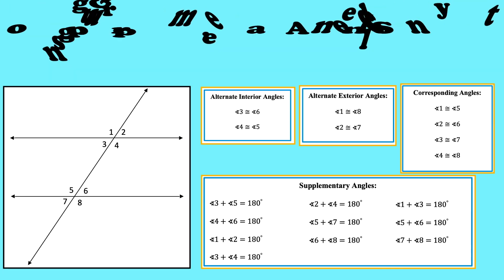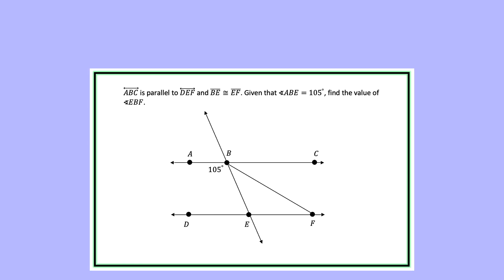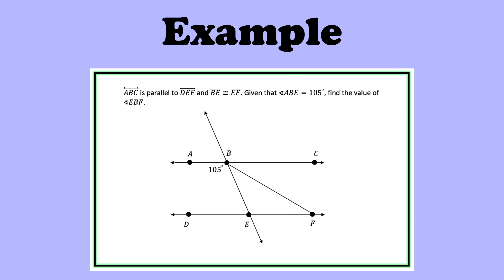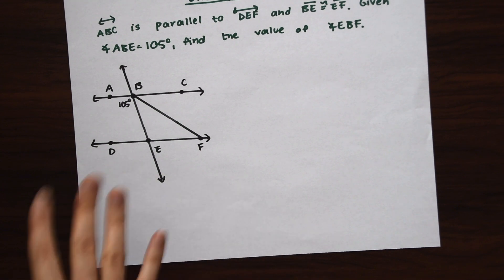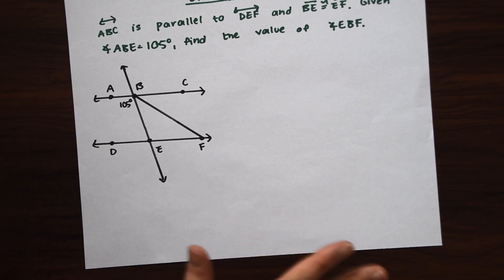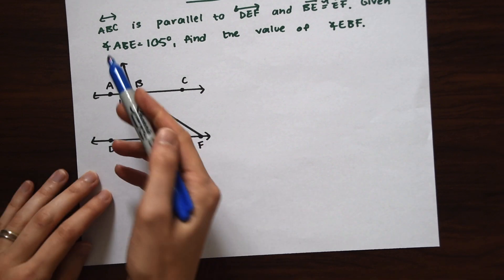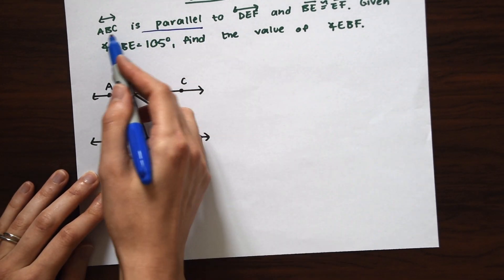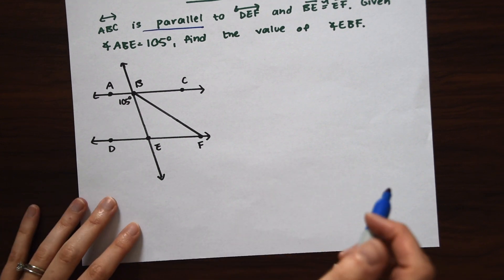In case you missed anything, take a look at all the rules about parallel lines and transversals — the congruent angles and supplementary angles we covered. Now let's look at our example, which says line ABC is parallel to line DEF. This looks a little different than what we've been working with, but we know this is a transversal situation because it states line ABC is parallel to DEF — and if we have two parallel lines with another line cutting through, we've got a transversal with all those congruent angle relationships.